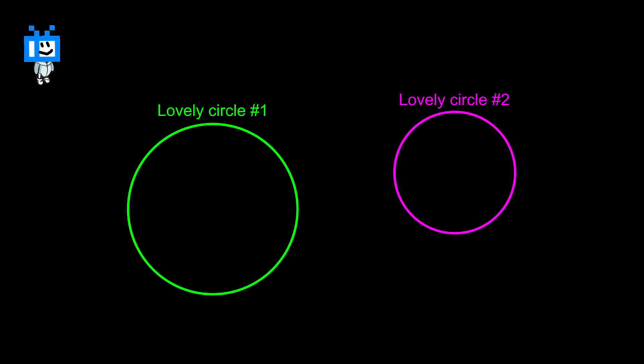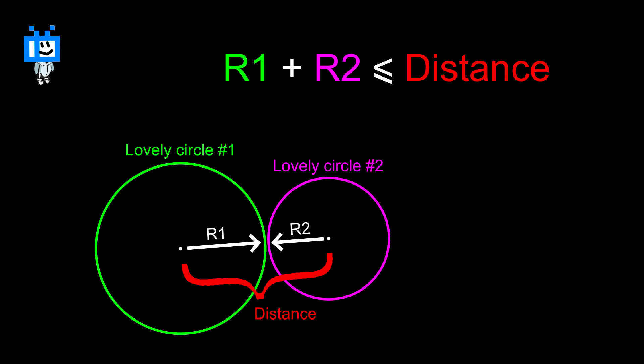Here's why. You see these two lovely circles? Aren't they amazing? Don't you want them to love each other? Well, to see if they are getting intimate, we only need to check their size and distance. If R1 plus R2 is less than or equal to the distance, well then they must be touching.